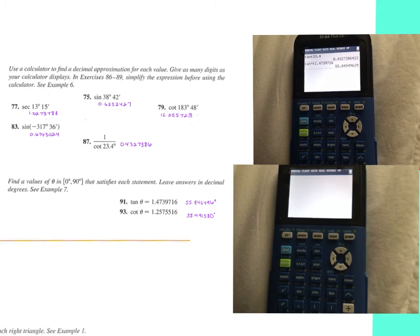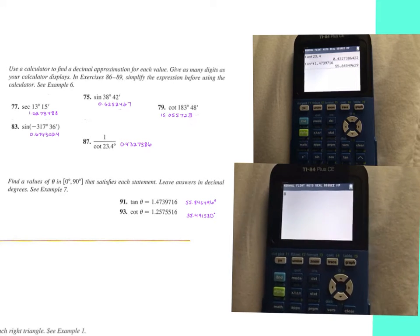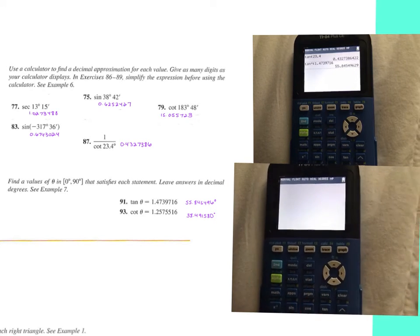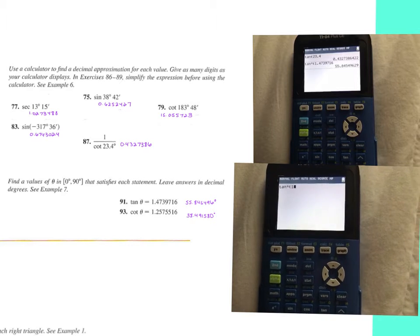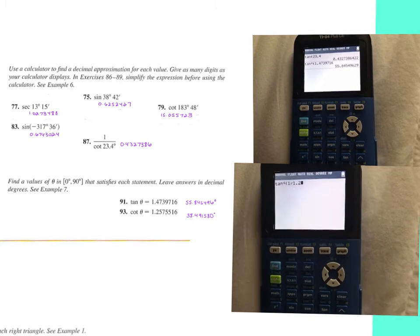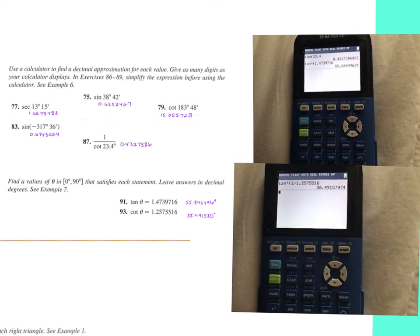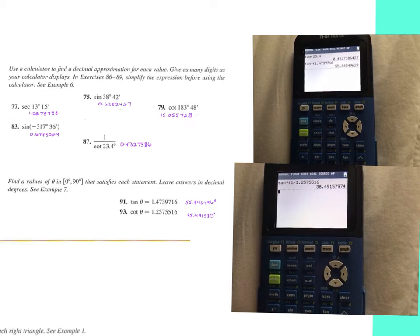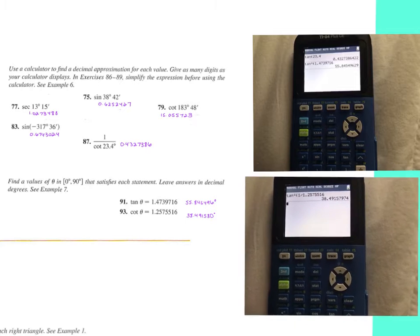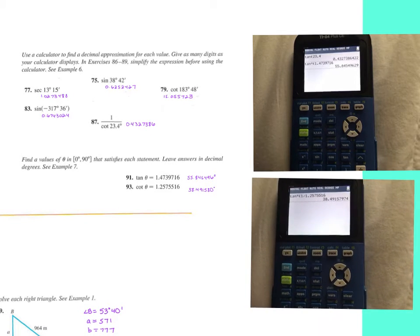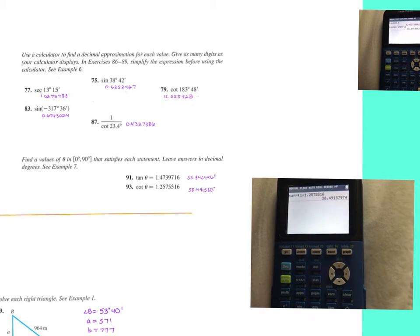For the cotangent one, we're doing second tangent, and then 1 divided by 1.2575516, and I get that 38.4915. This is rounded to 8, 0.